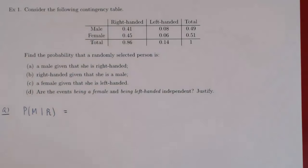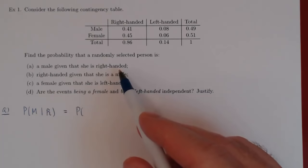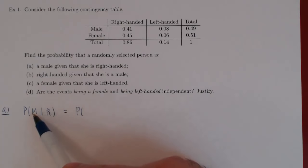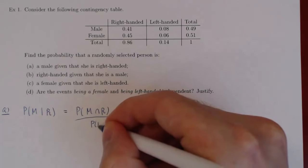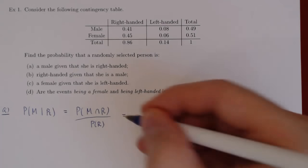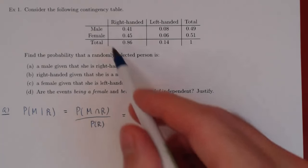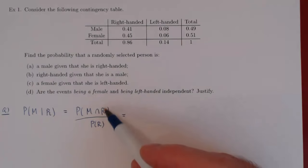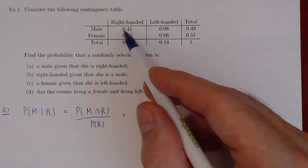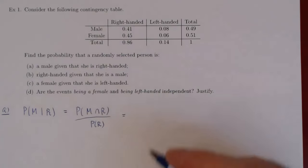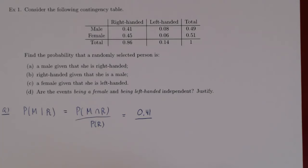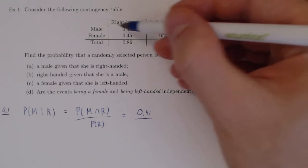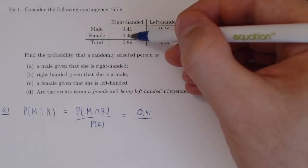Remember that P of M given R — given that we know the person is right-handed — what's the probability that the person is also a male? It is P of M intersected with R over P of R. This is the probability of the person being a male, so being in this row, and right-handed. The probability of male and right-handed is 0.41, over the probability of being right-handed.